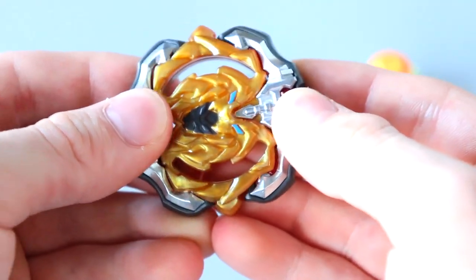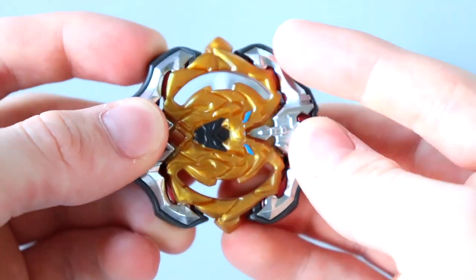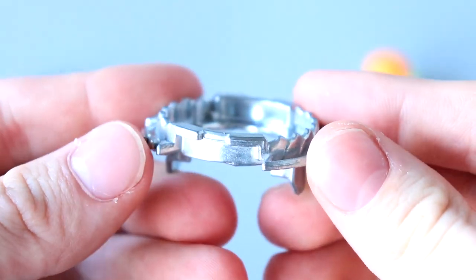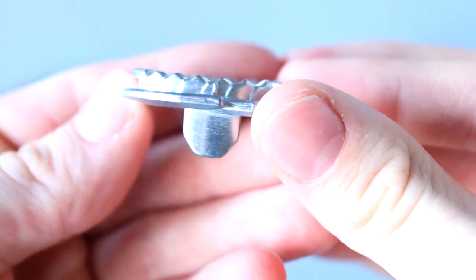Then we got 13 which we've seen before. It came with Bloody Longinus. It has these teeth on the bottom of it which was kind of weird. But yeah that's about it. It's okay, it's not great.